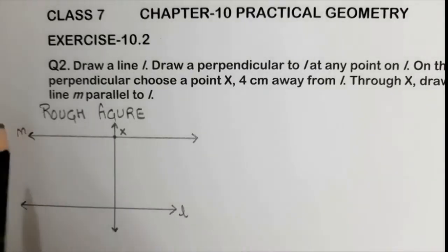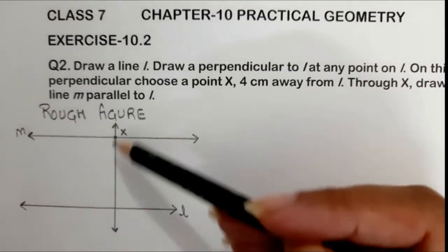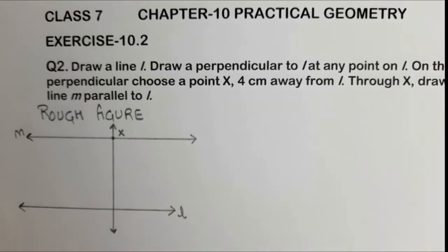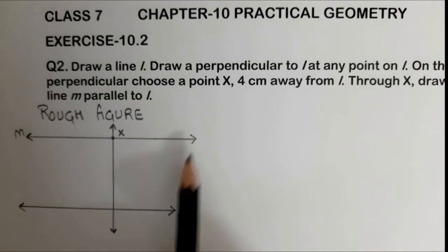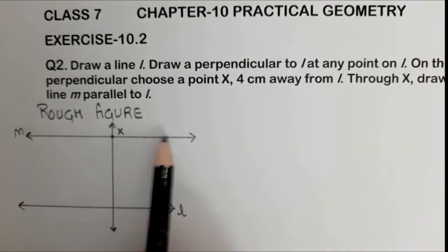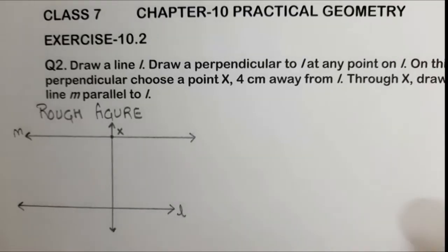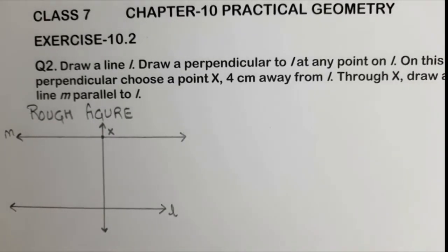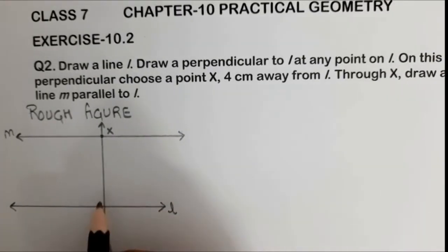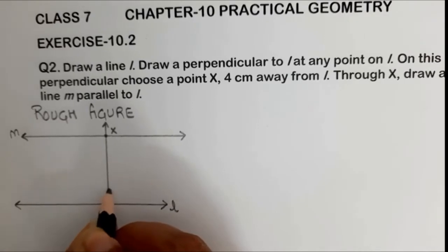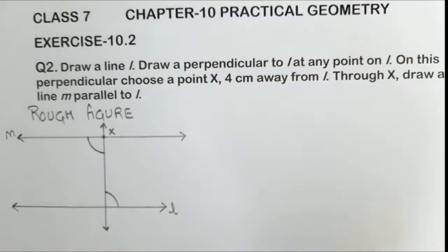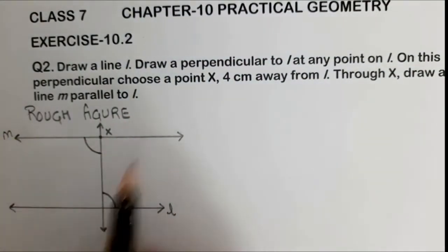Here what we are going to do is, we have presented the rough figure. We have a line L, then this is the perpendicular drawn to the line L, on this perpendicular we have marked the point X, and now we have to draw a line which is parallel to L and passes through X, which is line M. The concept we are going to use is that when we construct this perpendicular, we will be constructing an angle of 90 degrees here, and we will construct the copy of the same angle to get the parallel line.